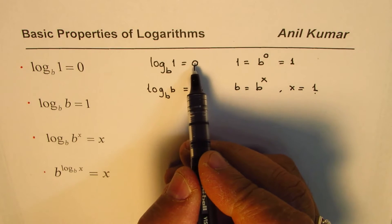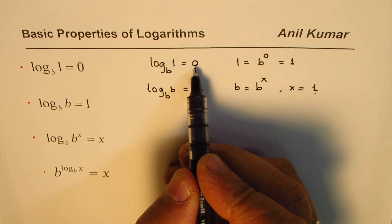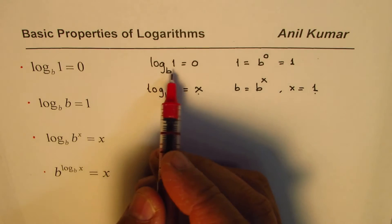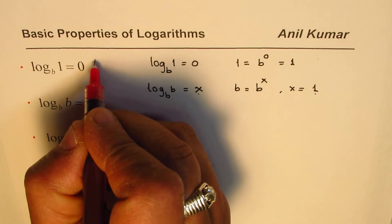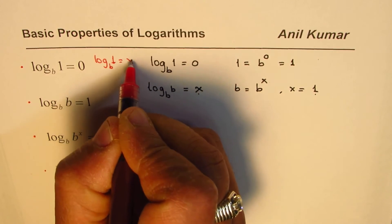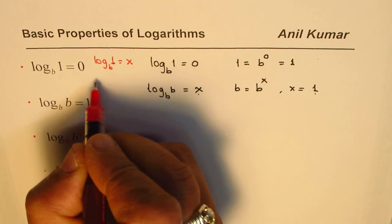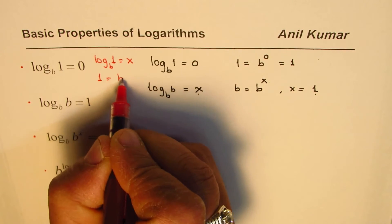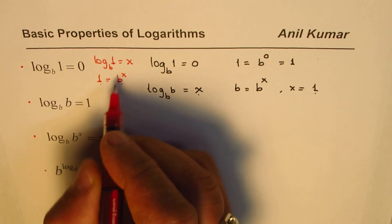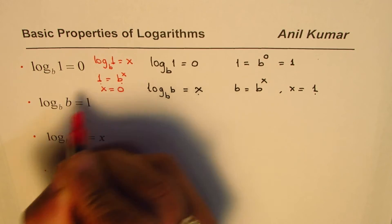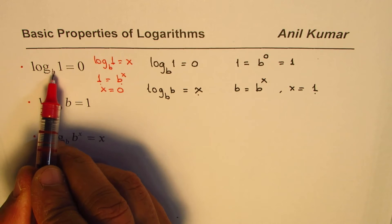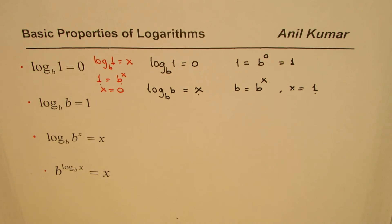We could prove the first property in a similar fashion. Write log_b(1) equals some number x; then 1 equals b to the power of x, and this equation is true only when x equals 0. So we get our property: log to the base b of 1 is 0.